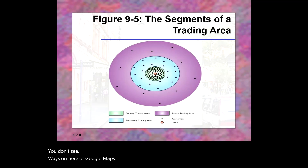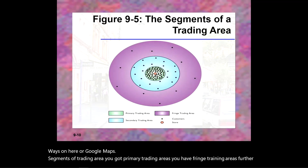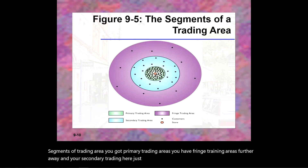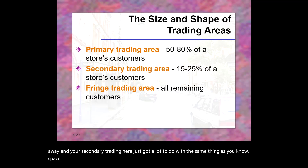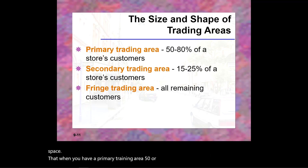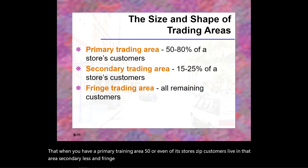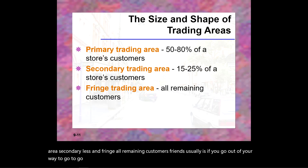The segments of a trading area include the primary trading area, secondary trading area, and fringe trading area. The primary trading area contains 50 to 80 percent of the store's customers. The secondary area contains fewer customers, and the fringe area includes all remaining customers — typically people who go out of their way, like on a day trip, to go shopping.